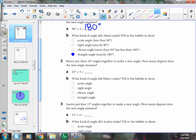Henry put three 45-degree angles together to make a new angle. How many degrees does the new angle measure?